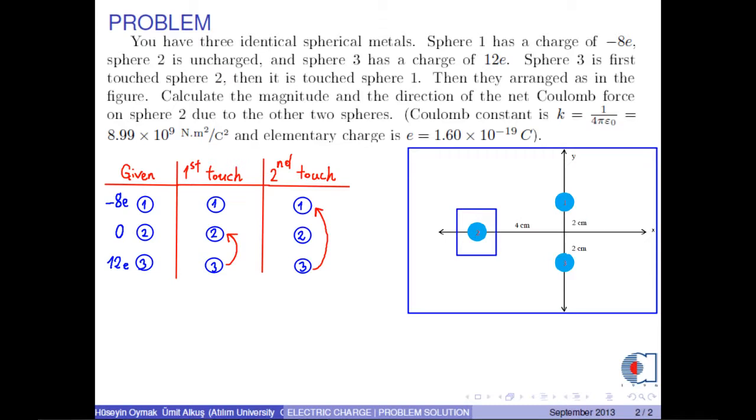After the first touch, the total charge of spheres 2 and 3 is shared equally between each sphere. Namely, they would be equal to Q2 plus Q3 over 2. Q2 is 0, Q3 is 12e, then the result is 6e. Therefore, we can write 6e for Sphere 2 and Sphere 3, but the charge of Sphere 1 does not change.